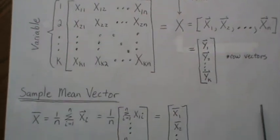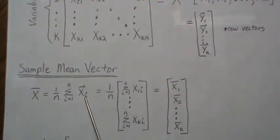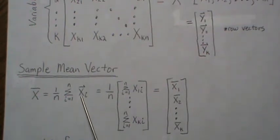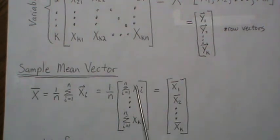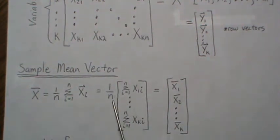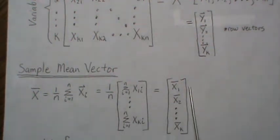Let's look at the sample mean vector first. You add up the observations and divide by n. But remember that these are k by 1 vectors, so we're adding up n vectors, and when you add up vectors, you add them component-wise. So you add all the variable 1 components, variable k, etc. And if we divide n into every one of those, then it would be the sample mean for variable 1, sample mean for variable 2, etc. But collectively, it's the sample mean vector.